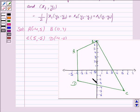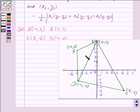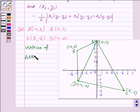Now we have to find the area of this quadrilateral. We divide it into two triangles by joining points B and D to make the diagonal BD. We will find the area of triangles ABD and BCD using the formula, then add the two areas to get the area of the quadrilateral. The vertices of triangle ABD are (-4, 5), (0, 7), and (-4, -2).